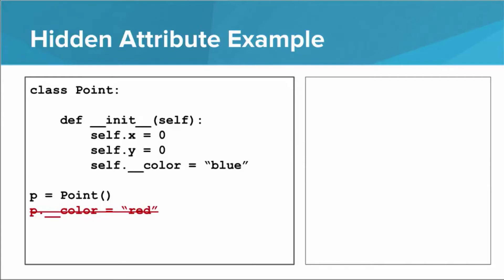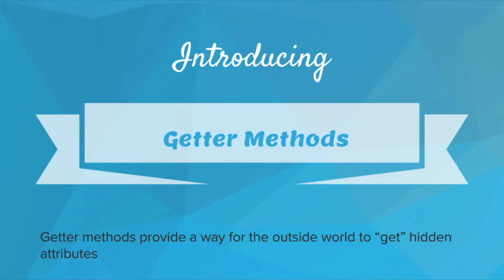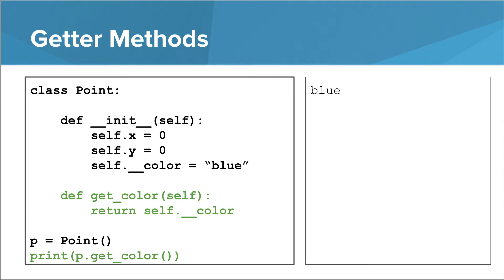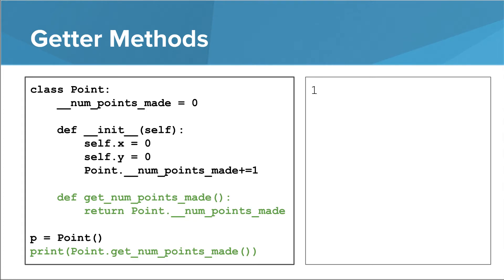So this is great, but now we have these attributes and we can't access them outside the class. The way we can access these hidden attributes is using getter methods. Getter methods provide a way for the outside world to get at these hidden attributes. We put the name of the hidden attribute after 'get' — so here we say getColor, which just returns self.color. Outside of the point class, we can print p.getColor and it'll print the color of this point, which is blue. Similarly, we can define getNumPointsMade at the class level, which simply returns the value of numPointsMade. Note that this getter method doesn't take self as a parameter — it is a class level method, so we call it on the Point class itself rather than an instance.